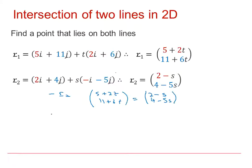So it's very important at this stage for two vectors to equal each other. The I components must be the same. So 5 plus 2T must be the same as 2 minus S, and the J components must be the same as well.